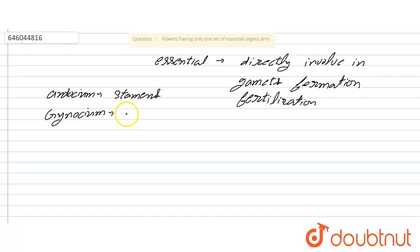If the flower has both of these organs, it is called bisexual. If the flower has only one, either androecium or gynoecium, it's called a unisexual flower.